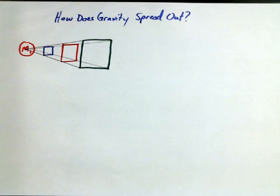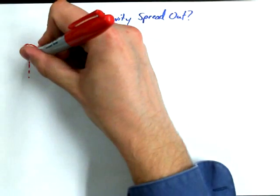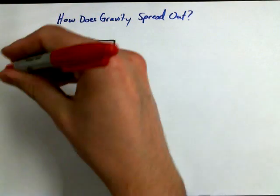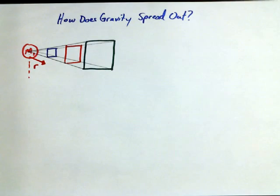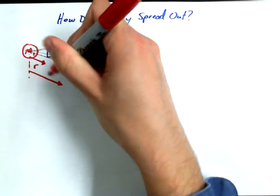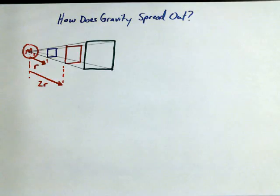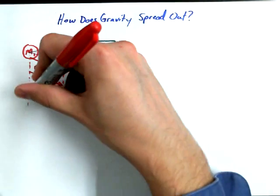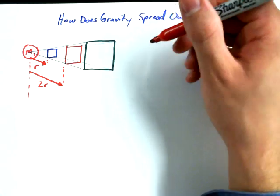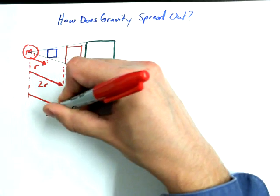Now I want to label this up a little bit differently. If I draw a dotted line from here to here, from the center of mass out to that first square, I'm going to say is one unit of distance away. And from the center of mass out to the second square, I could call it two units of distance away. So by the time I get out to the third square, how many units of distance away am I? Three. Three units of distance away.